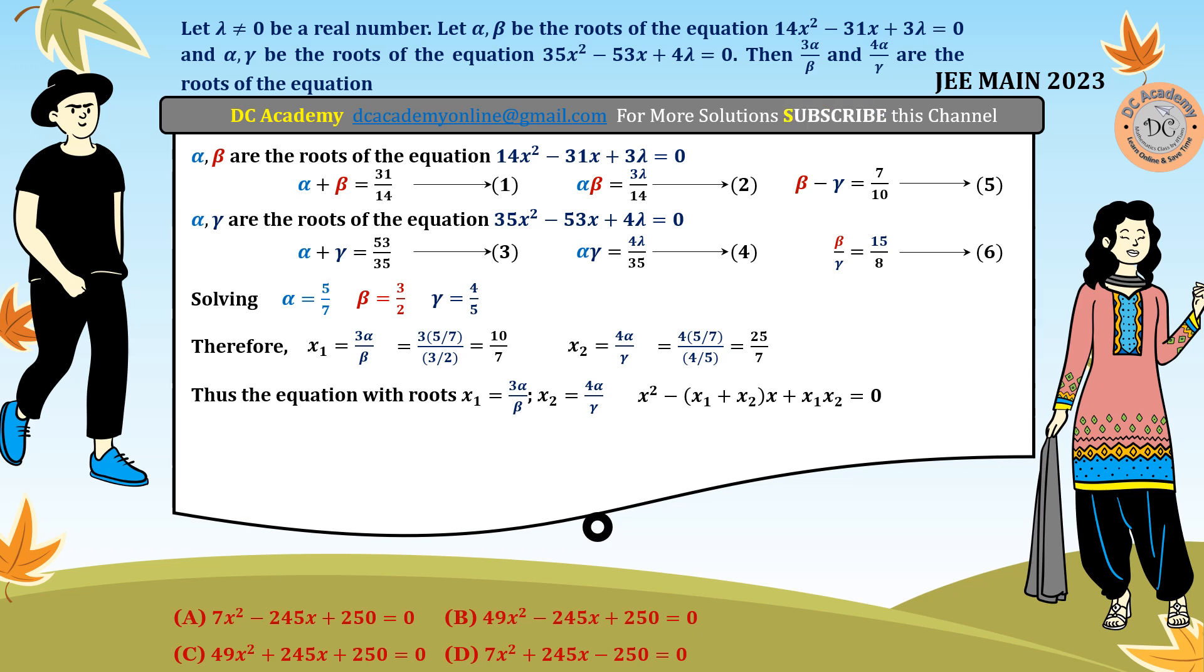Substituting the appropriate values, we get x² - 35/7 x + 250/49 = 0, which simplifies to x² - 5x + 250/49 = 0. Multiplying both sides by 49, we get 49x² - 245x + 250 = 0.